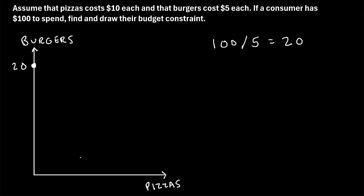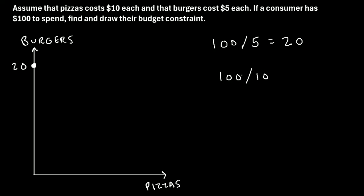On the flip side, what if we only bought pizzas? How many pizzas could we buy? We have $100 to spend and one pizza costs $10, so the number of pizzas we could buy is 100 divided by 10, which is 10. So if we spent all of our money on pizzas, we could buy 10 pizzas. Let's mark that point — 10 pizzas.